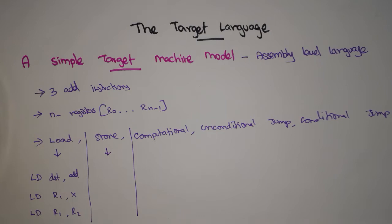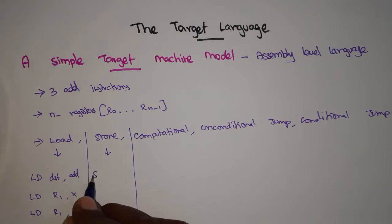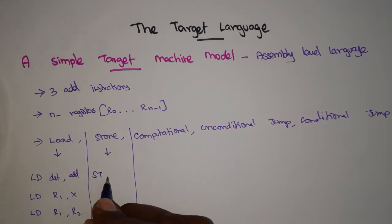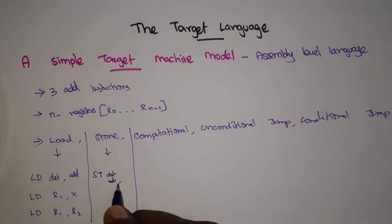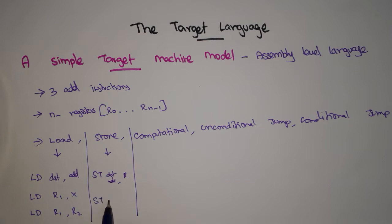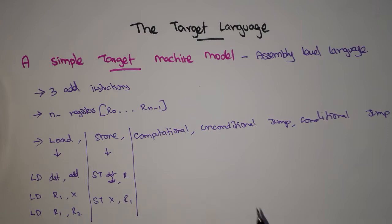Store instruction is used to store the value already in a register to a memory location. The syntax is: ST destination_address, register. For example, ST X, R1 means the value in register R1 is moved to memory location X.